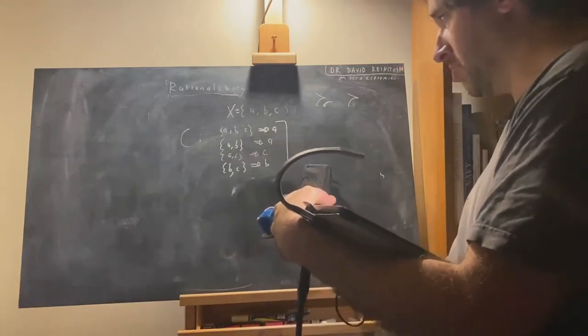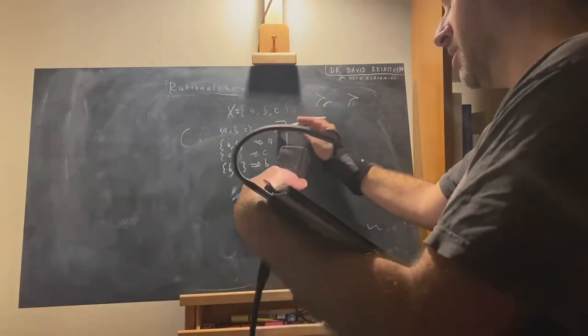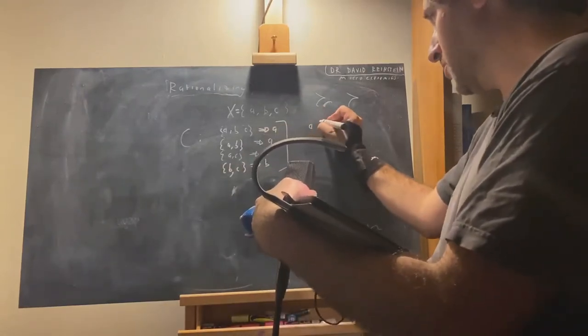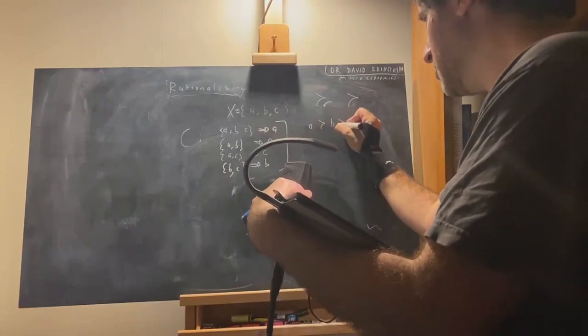Okay, so it's pretty simple here. We see A is the best of the bunch, but when we've only got B and C, we choose B. So this is rationalized by A strictly better than B, strictly better than C.